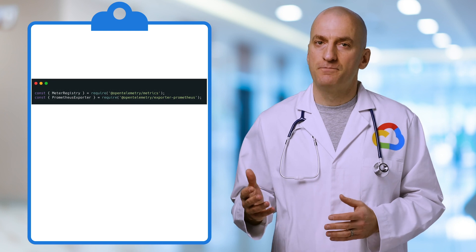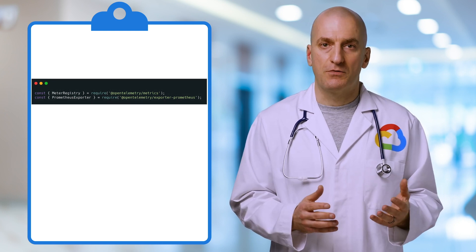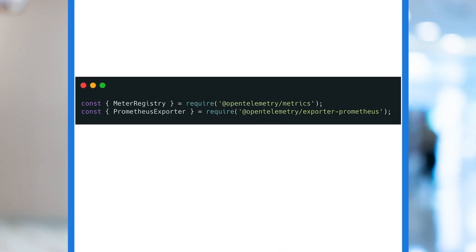Let's get into the code. As always, we'll link to the repo in the episode notes. For this example, we'll send the metrics we collect to Prometheus, which we covered in the previous episode. First, let's import the necessary packages: the OpenTelemetry metrics package and the Prometheus exporter.